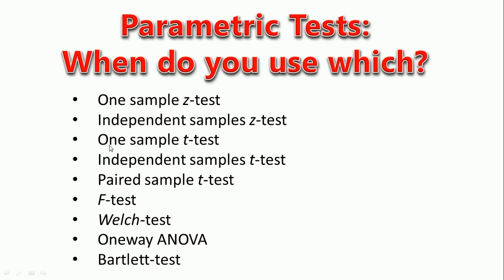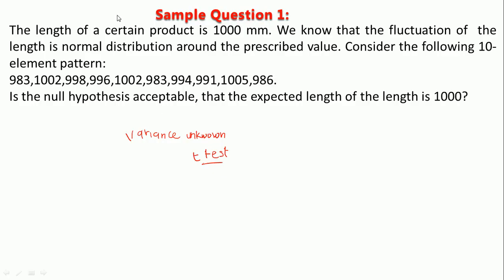This is number three here. We are using the t-test because the variance is not given. If in the problem the variance is given, then it's not going to be a t-test.